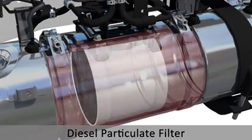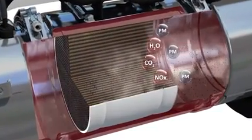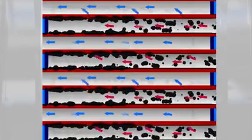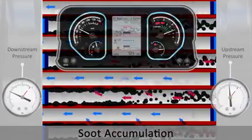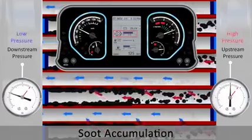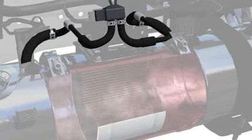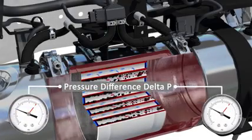Diesel particulate filter. DPF filters the particulate matter from the exhaust gas. DPF is a cordierite wall flow filter made of porous platinum and palladium-coated material that traps exhaust particulates. Channels are made of pores for easy flow. Soot gets trapped into pores and eventually forms a cake layer on the channel wall, creating high pressure in the DPF. A differential pressure sensor is connected at the DPF, with pressure tubes connected at the upstream and downstream of the DPF to measure the differential pressure delta P across the DPF.